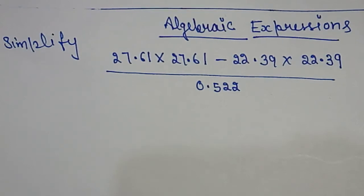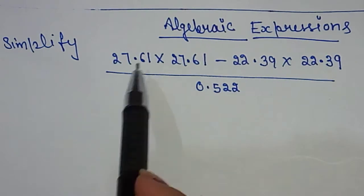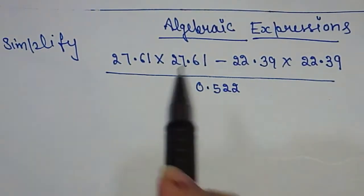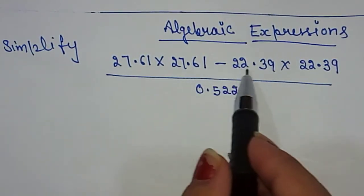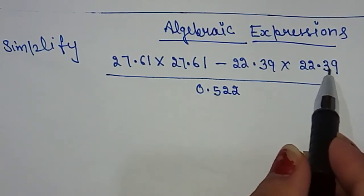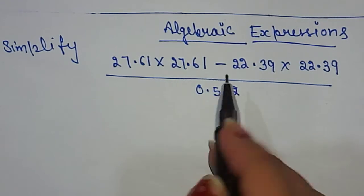Hello students, I hope you all are doing well. Today I'm going to discuss with you how to simplify decimals using algebraic expressions. The question is: 27.61 × 27.61 - 22.39 × 22.39 divided by 0.522. How will we solve this?